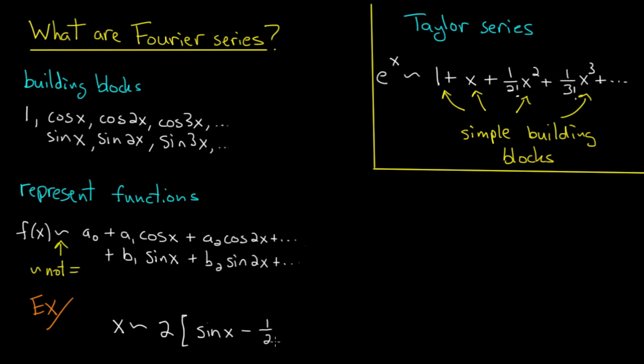We'll discuss how to compute the representation and more subtle aspects of how it is representing x in due time. So what I'll do is I'll just give it to you. It's 2 times the quantity sine of x, minus 1 half sine of 2x, plus 1 third sine of 3x, minus 1 fourth sine of 4x, and you can see how the pattern will continue out to infinity.